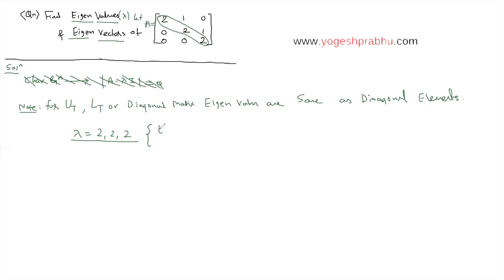So lambda, the eigenvalues, are 2, 2, and 2 — all of them are 2, that's how we get it directly. The first part is done; we have already found the eigenvalues.